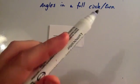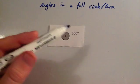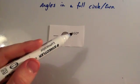OK, we're now going to look at angles in a full circle or a full turn. The angles in a full turn add up to give 360 degrees.